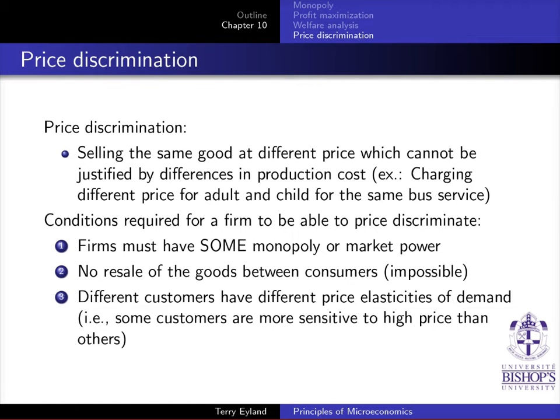So what are the conditions required for there to be price discrimination? Well, firms must have some monopoly or market power. When I say some, an example of a firm that doesn't necessarily have complete monopoly power could be a movie theater in Sherbrooke. There's La Maison Cinema and Cineplex, so they have some monopoly power but not necessarily complete monopoly power.